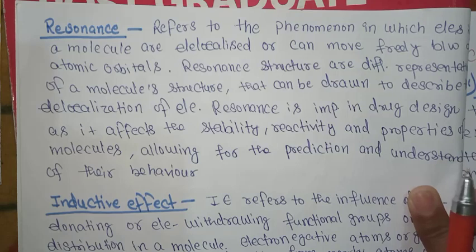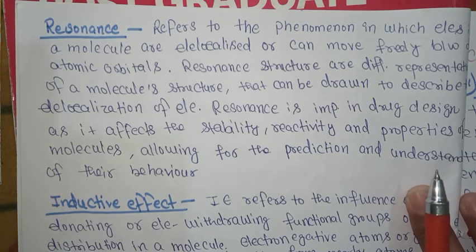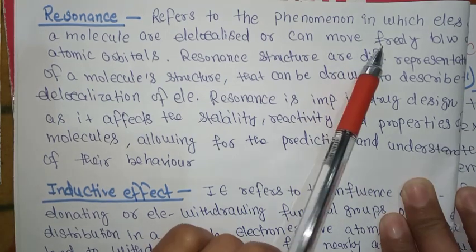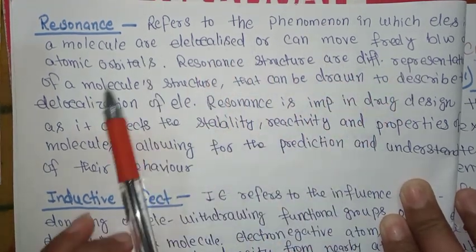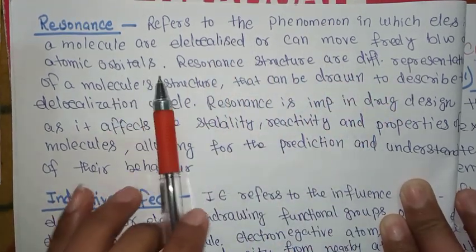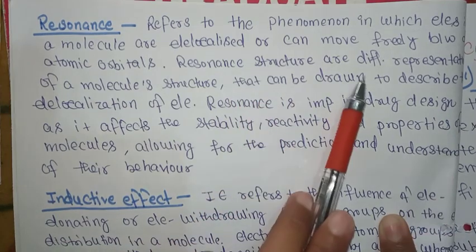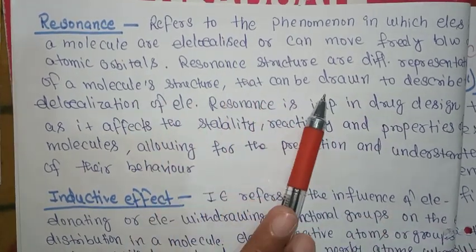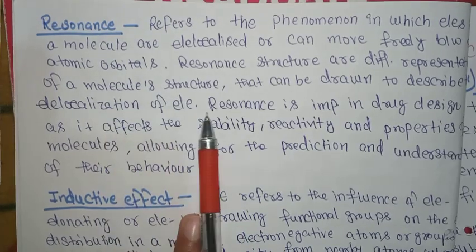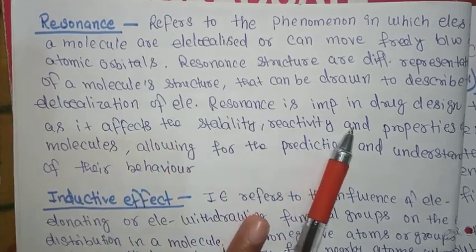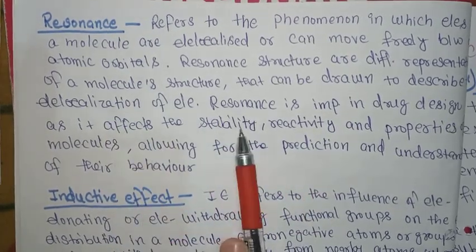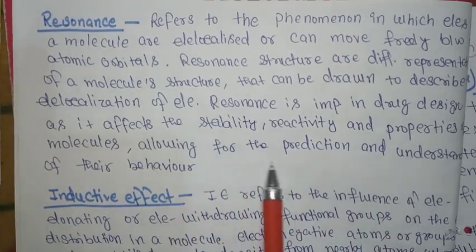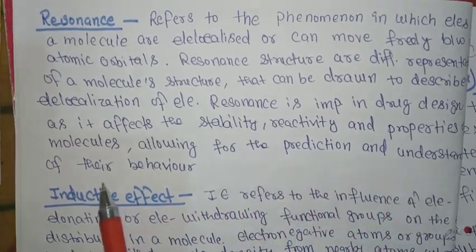Resonance refers to the phenomenon in which electrons in a molecule are delocalized or can move freely between atomic orbitals. Resonance structures are different representations of a molecule's structure that can be drawn to describe the delocalization of electrons. Resonance is important in drug design as it affects the stability, reactivity, and properties of a molecule, allowing for prediction and understanding of their behavior.